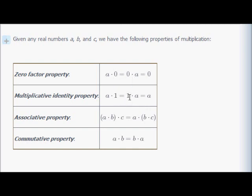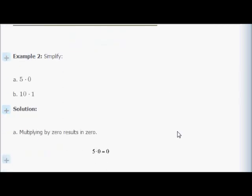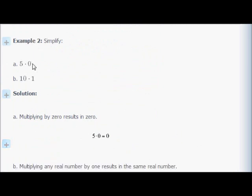The associative property: remember 'associative' means grouping. You can multiply a by b first and then multiply that result by c, or multiply a by the result of b times c — you get the same answer. The commutative property means order: no matter what you're multiplying, a times b equals b times a. For example, 5 times 0 is 0, and 10 times 1 is 10.